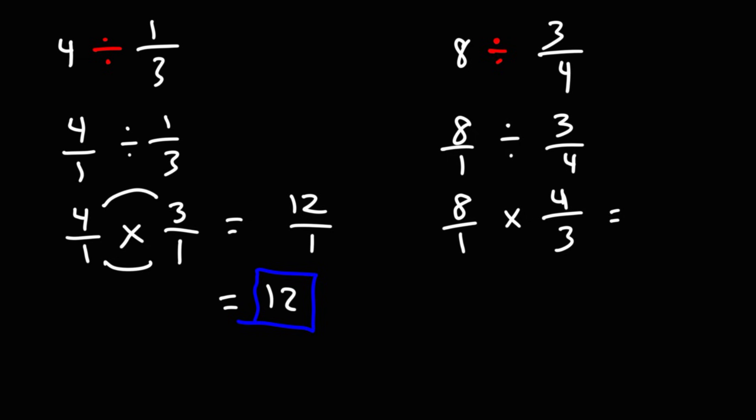Now we can multiply across. 8 times 4 is 32, 1 times 3 is 3. So the answer as an improper fraction is 32 over 3.